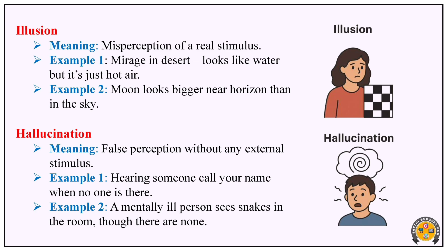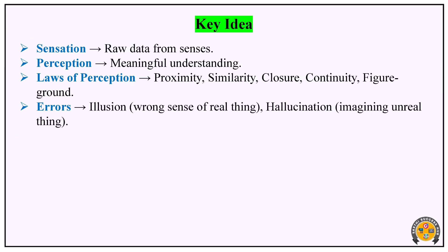So to summarize: sensation is raw data from our sense organs; perception is the meaningful understanding of that data. The laws of perception are proximity, similarity, closure, continuity, and figure and ground. Errors in perception include illusion — a wrong interpretation of a real object — and hallucination — a false perception with no external stimulus present.